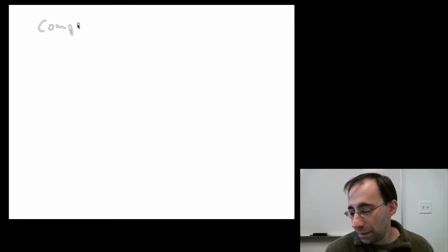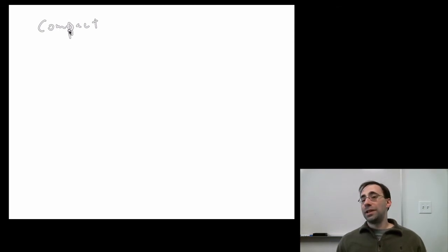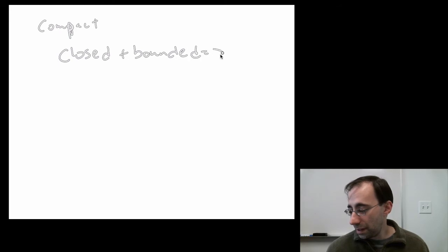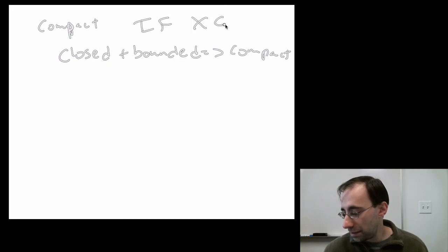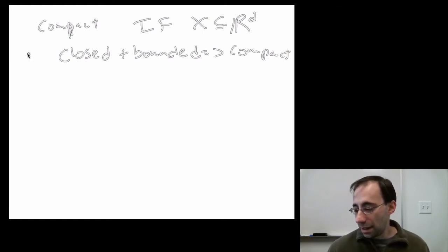Compact is an incredibly useful set property in order to understand optimization, in particular. We're not going to present the general definition of this, that any open cover of a set has a finite subcover. Rather, we'll discuss the definition that's only used for real numbers, and that is that any subset of the real numbers that's closed and bounded, or any subset of Euclidean space in general, that's closed and bounded is compact.